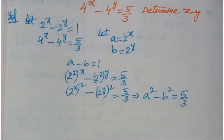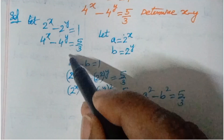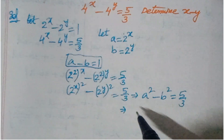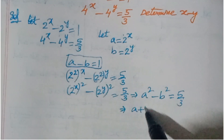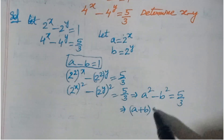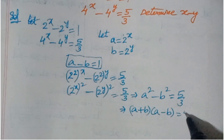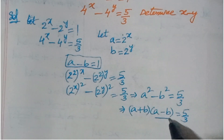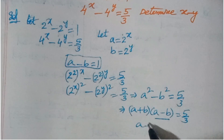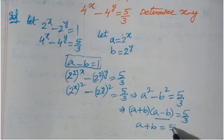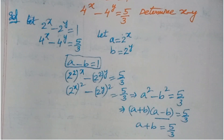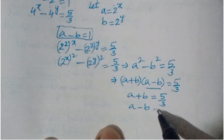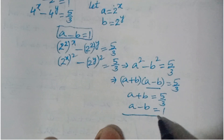Now, a² minus b² factors as (a + b)(a − b) equals 5/3. Since a minus b equals 1, we get a plus b equals 5/3.